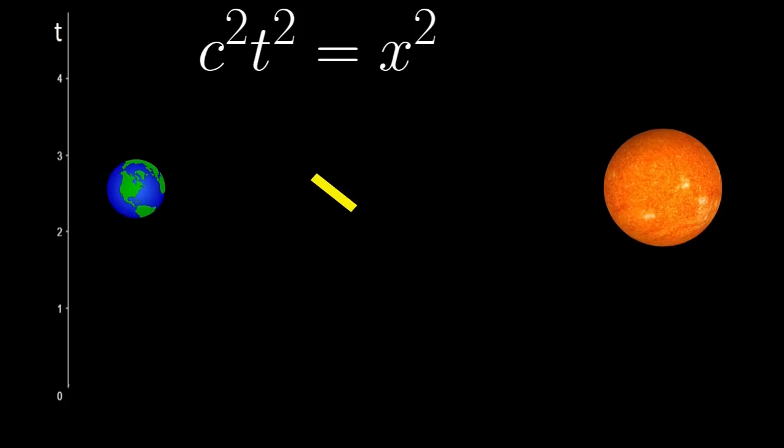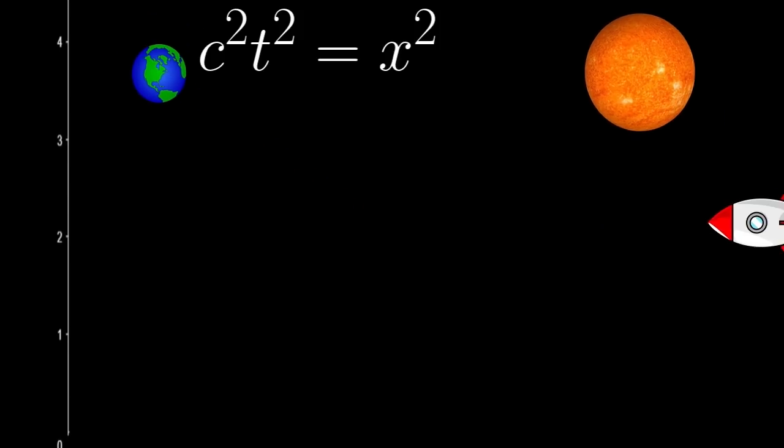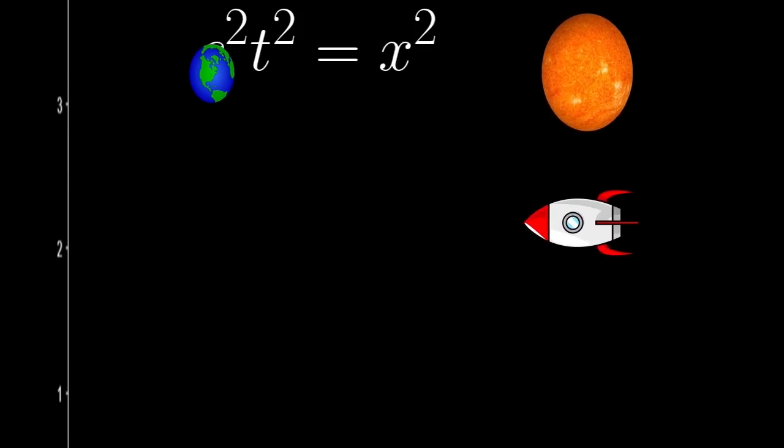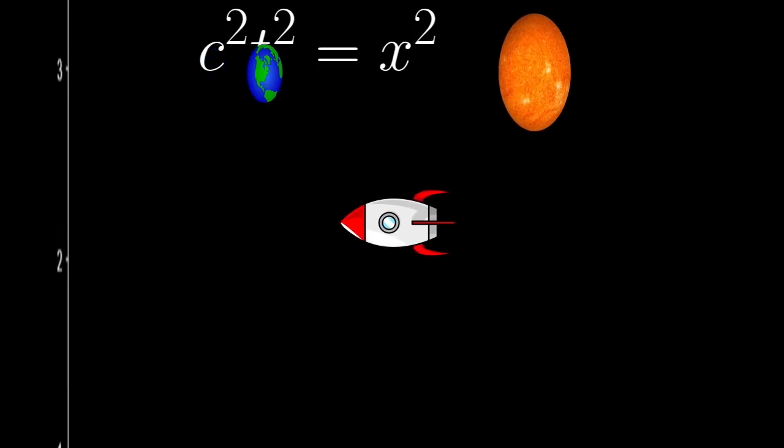Unsurprisingly, that means it takes light four years to reach us from Alpha Centauri, but those measurements, four light years, four years, are only true in our reference frame.